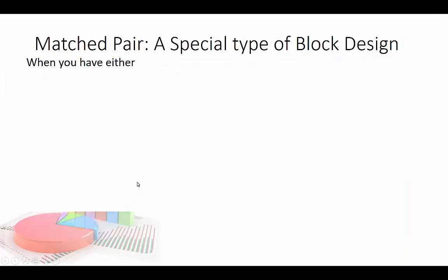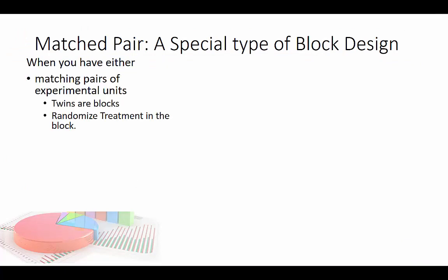There are other special block designs called matched pair designs. We use these when you have matching pairs of experimental units — like twins. Remember the preacher who said he'd keep one twin as a control for the baptism? That's more of a matched pair design. Instead of randomly assigning twins to two blocks, each pair of twins is its own block, and you randomize the treatment within that pair.